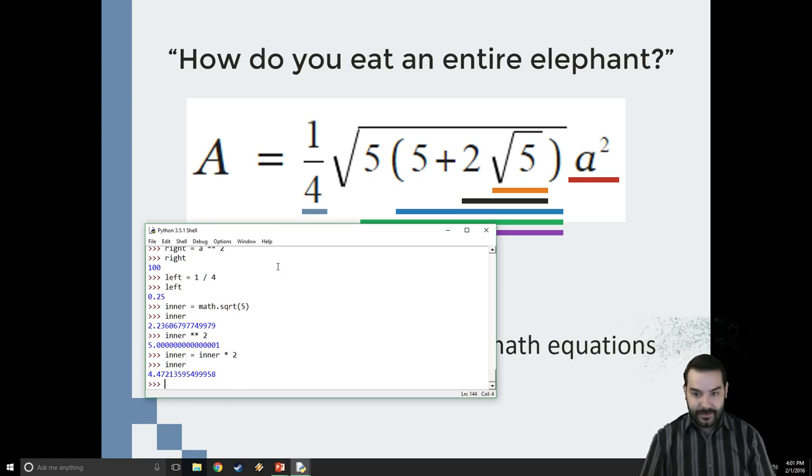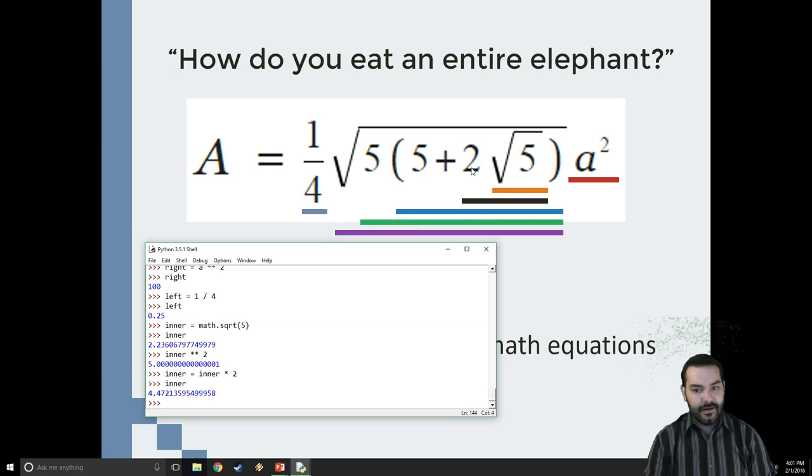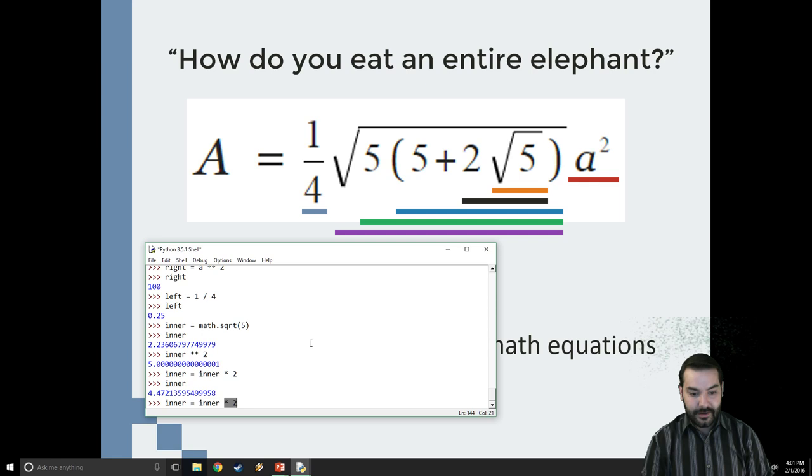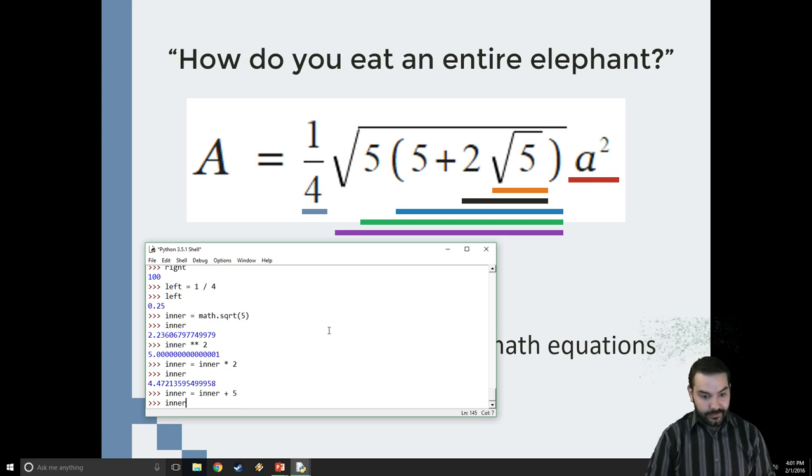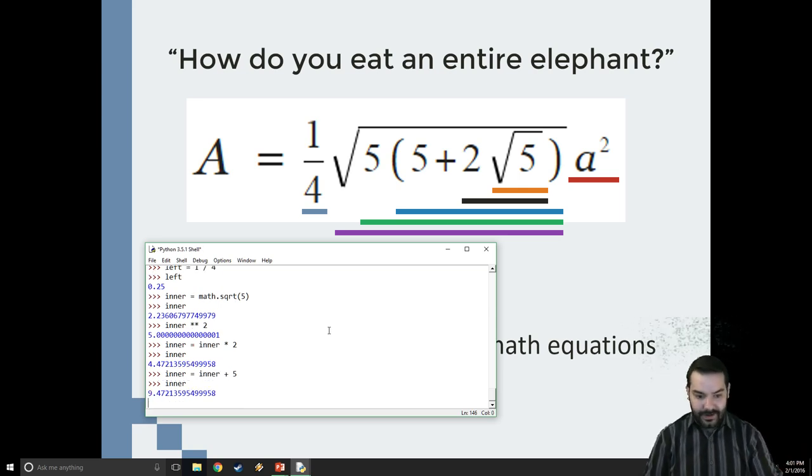We can do the exact same thing again. As you can see, the color coding is starting to make sense. Oh, okay, I multiplied. So the next step is obviously I add 5. All right, well, I come in. Instead of doing multiplied by 2, I just say add by 5. Oh, inner, well, 4.4 plus 5 gives me a 9. Okay, I'm starting to get this.